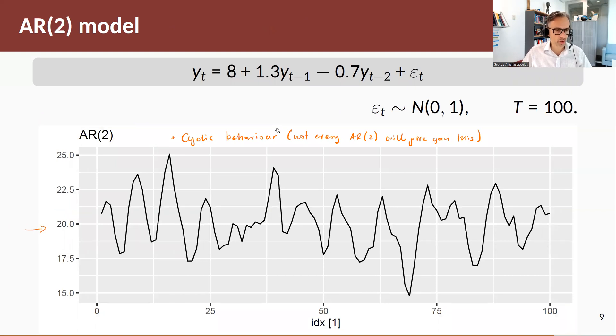Here's an AR2 model, so now we have two autoregressive coefficients and two lags of y_t: y_{t-1} and y_{t-2}. Notice here that we get cyclic behavior, and this is the first time you see cyclic behavior being generated from a model.